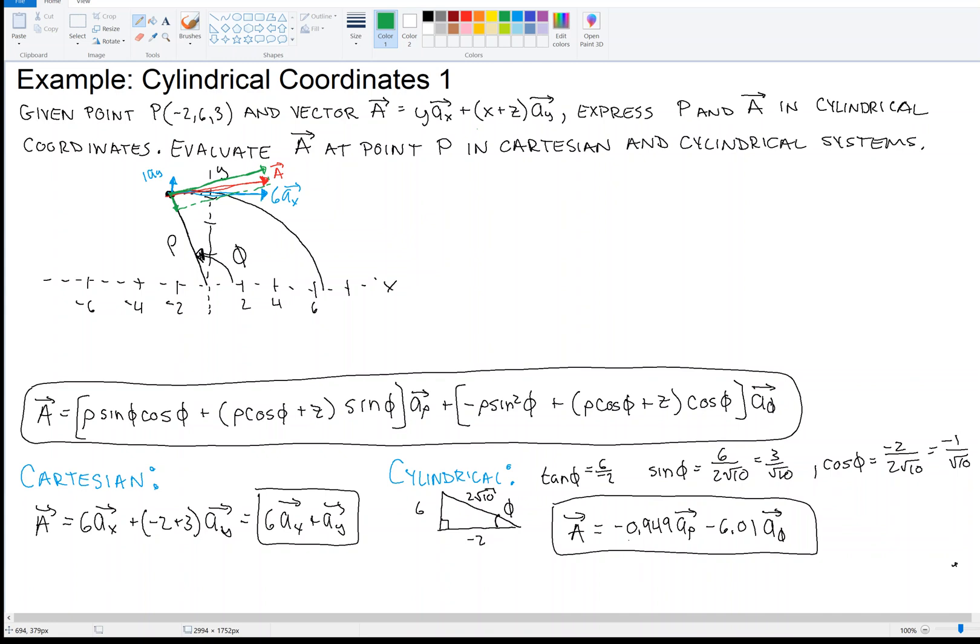And I should, because the Cartesian and the cylindrical, they're showing the same vector. This is the same vector A. It's just two different representations of it.